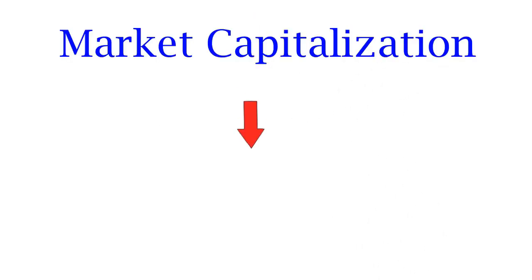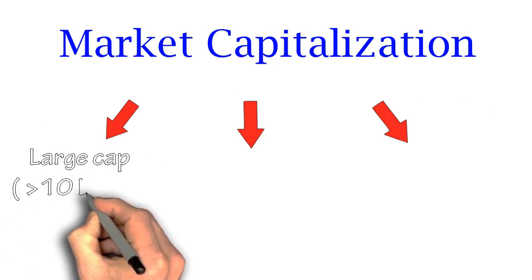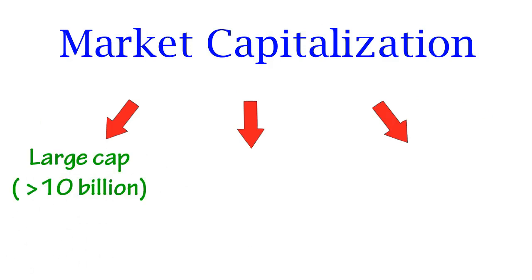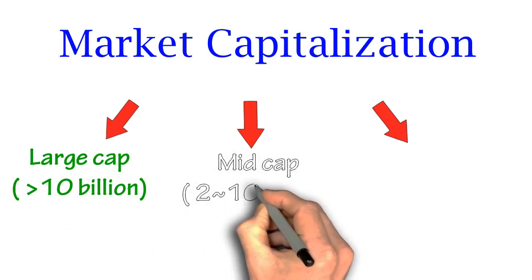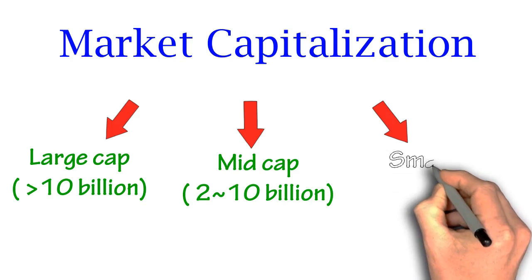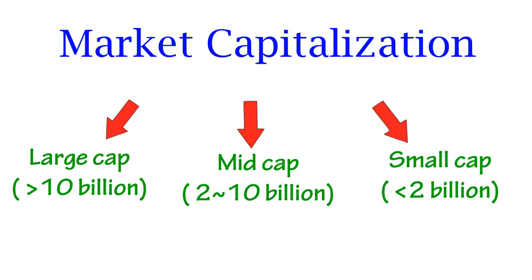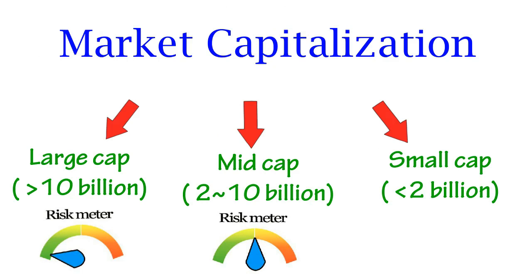Market cap can be divided into three different levels: large cap, in which market cap is more than 10 billion; mid cap, in which market cap is between 2 and 10 billion; and small cap, in which market cap is less than 2 billion. Different market caps consist of different risk levels, and we will explain each in detail.